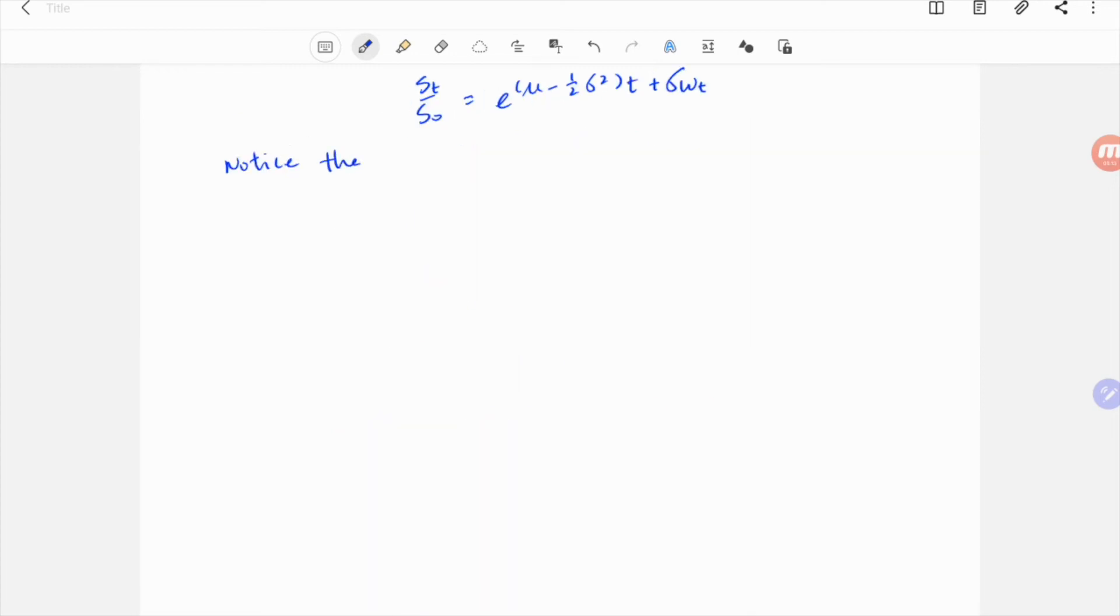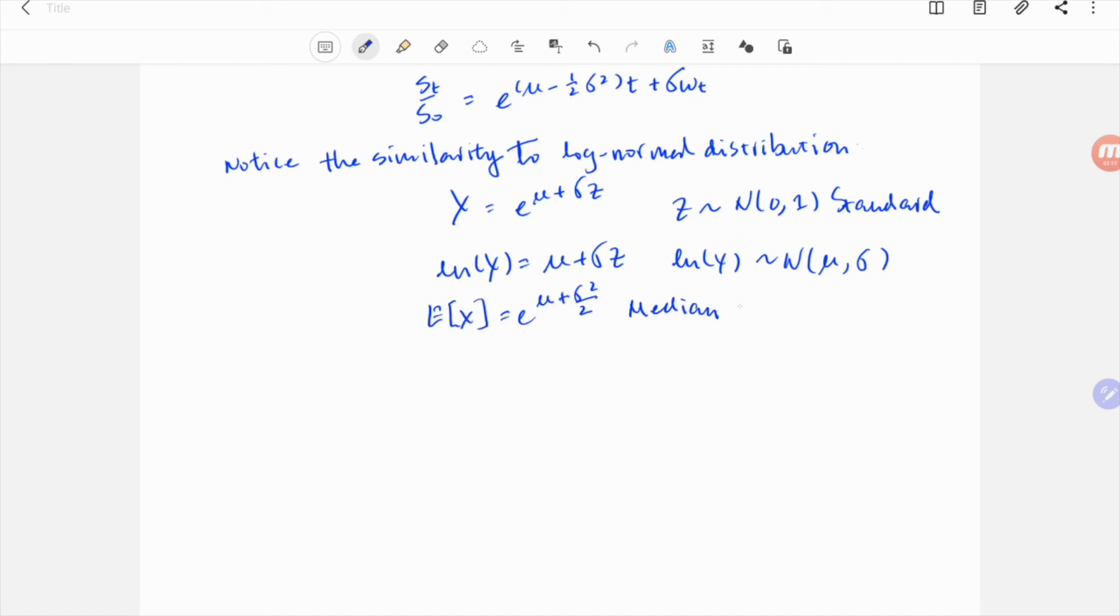Taking a closer look at the solution, we notice the similarity to the log normal distribution: x equals exponential mu plus sigma z, where z follows standard normal distribution. The reason it's called log normal: if we take logarithmic of both sides, we get log x equals mu plus sigma z. So log x follows normal distribution with mean zero and variance sigma squared.